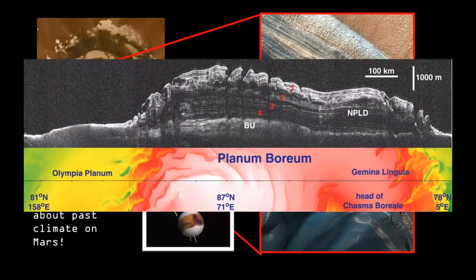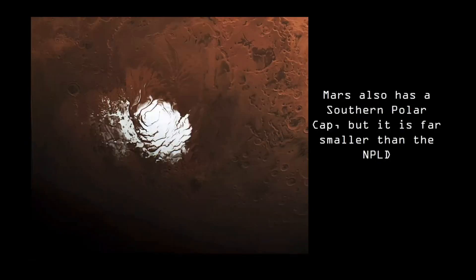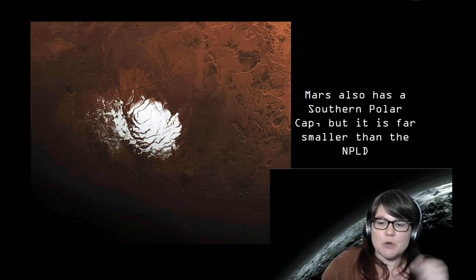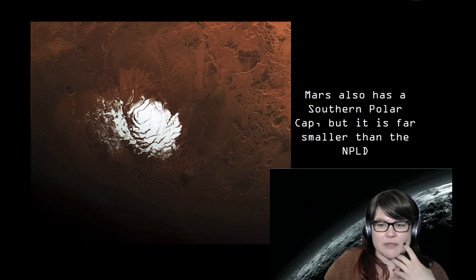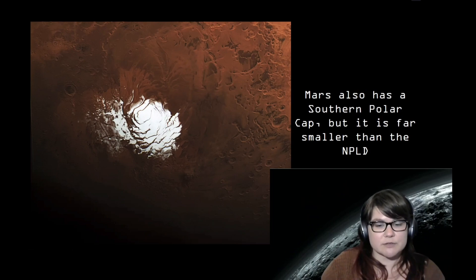While we don't have the ability to get ice cores from the NPLD right now, we do have an orbital radar that can be used to observe its structure. This image shows the NPLD with a radar survey cutting through its layers, and we can see the internal reflectors of those layers. Mars also has a southern polar cap, but it's far smaller than the NPLD — about 250 miles across. Both Mars polar caps are a combination of water ice and carbon dioxide ice. As Martian seasons change, carbon dioxide vaporizes in the summer and freezes again in the winter, so there's some seasonal growth.